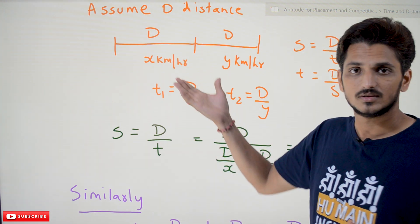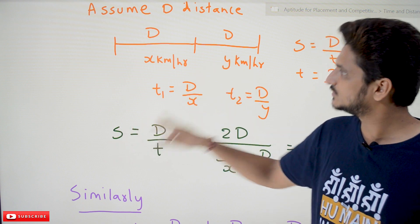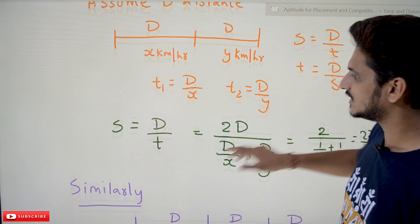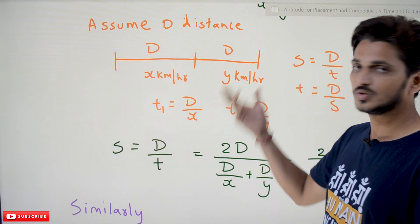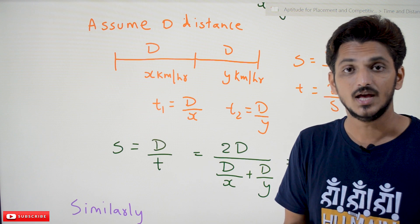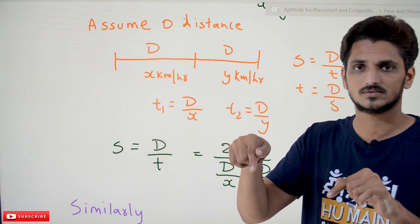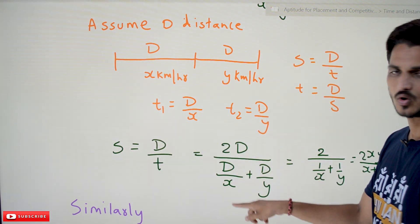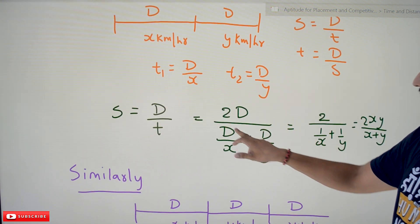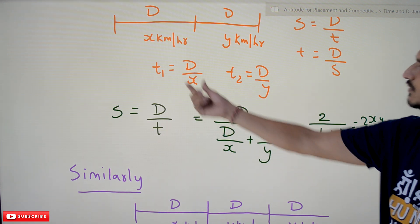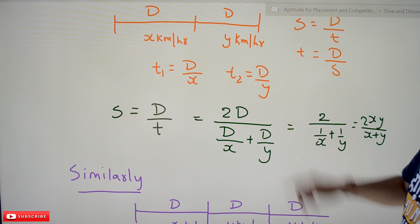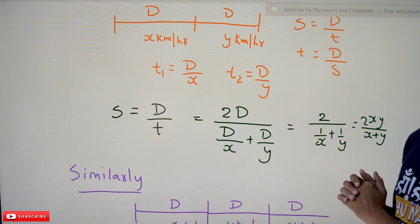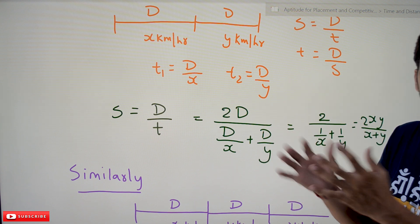Why we call this average speed — that intuition was provided in our previous class, so please watch that class. Average speed equals total distance divided by total time, which is 2d divided by (d/x plus d/y). Canceling d from numerator and denominator gives 2 divided by (1/x plus 1/y), which equals 2xy divided by (x plus y). This is how we got this formula.